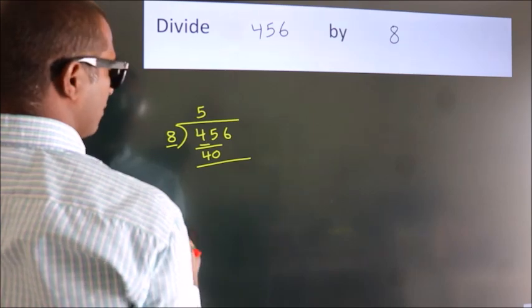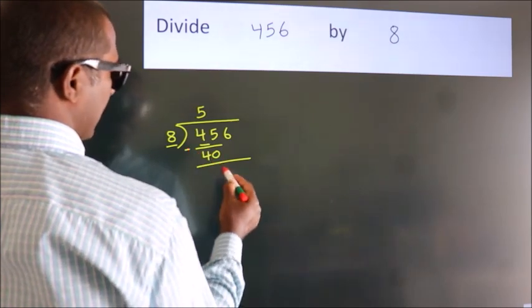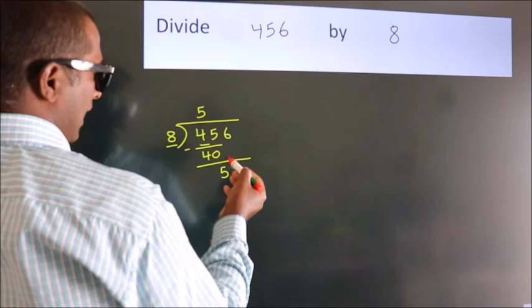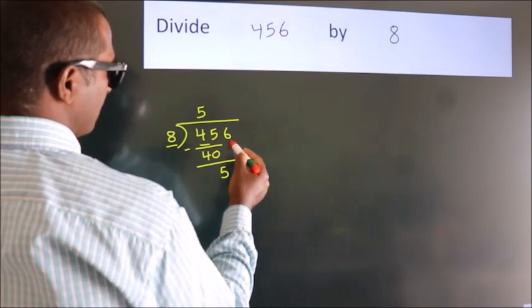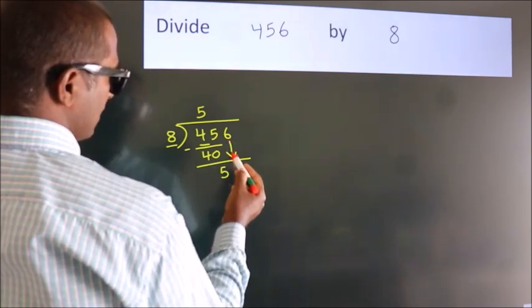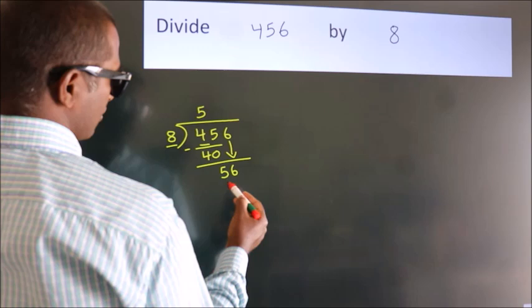Now, we should subtract, we get 5. After this, bring down the beside number. So, 6 now. So, 56.